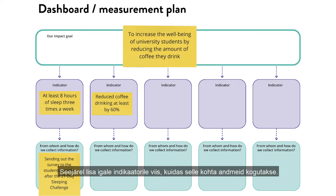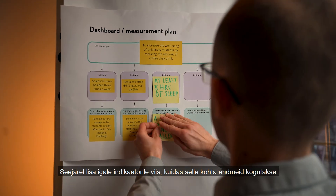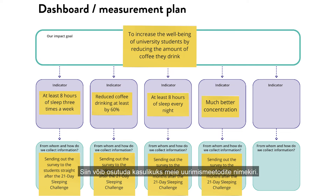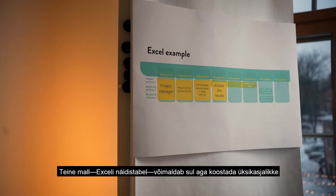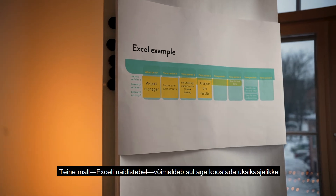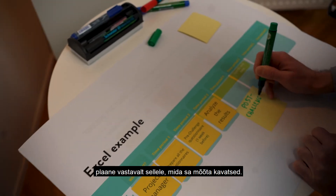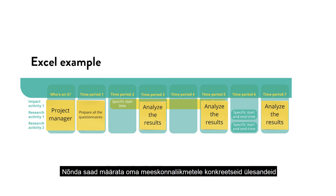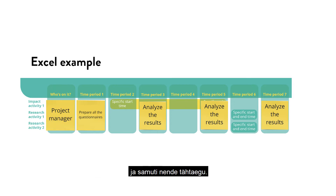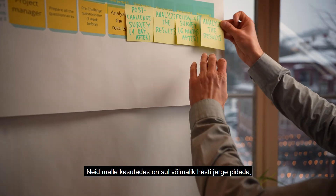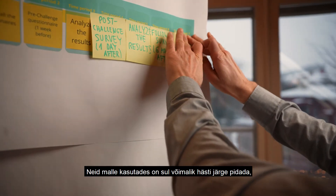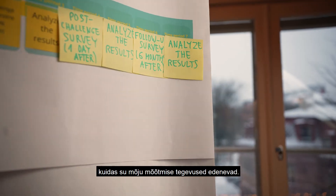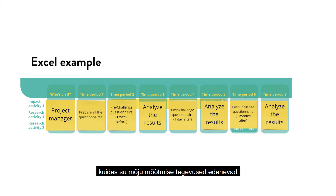Then for each of the indicators, add a way of collecting data about it. Our research methods tool can be useful here. The other template and Excel example, however, lets you develop specific plans based on what you are planning to measure. You can assign specific tasks to your team members as well as arrange deadlines for them. As a result of using both of the templates, you will be able to clearly track whether you are making progress with your impact measurement activities.